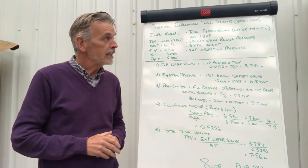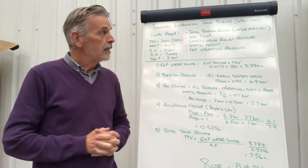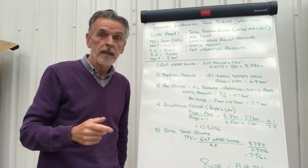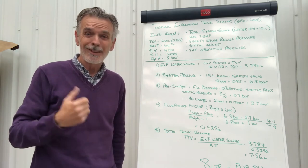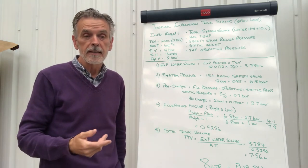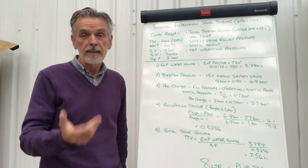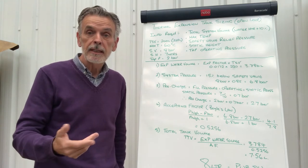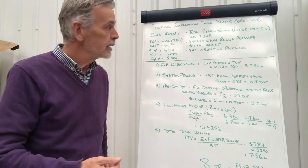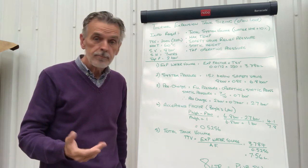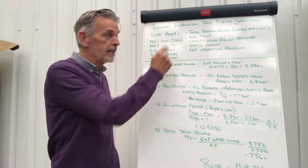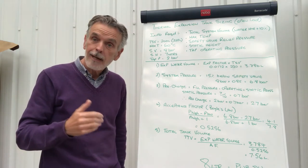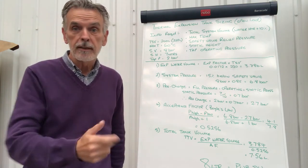So the first thing we need are some basic parameters: the total system volume of the water in the system, the quickest and simplest way of calculating this is the calorifier size or unvented cylinder size plus 10%, the maximum temperature that you will be storing the water at, the safety valve relief pressure, the static height to the highest discharge point in the building, and the tap operating pressure that you require at that particular point.